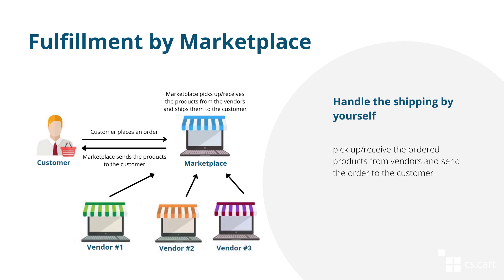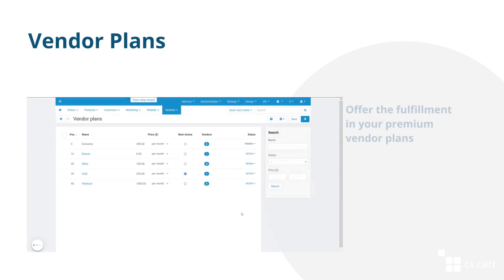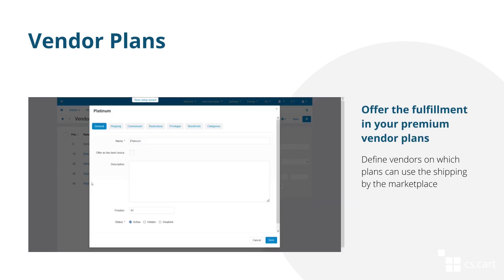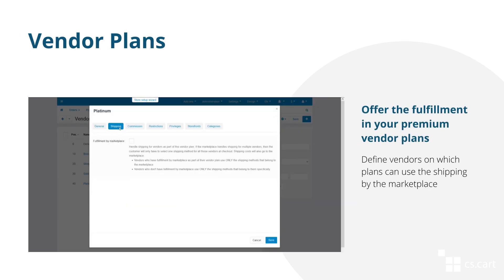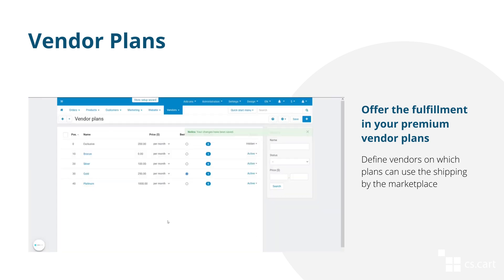Now let's discuss the second model where the marketplace handles the shipping. The marketplace picks up or receives the ordered products from the vendors and sends the order to the customers. The marketplace handles shipping and therefore receives the money for it. All the extra expenses can be included in the vendor plan cost. The vendor plan determines if a vendor will ship products themselves or leave it to the marketplace. Using the plans, you can charge the sellers for your services and encourage them to go to the premium vendor plans that offer fulfillment by marketplace.